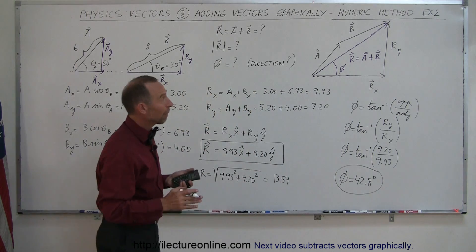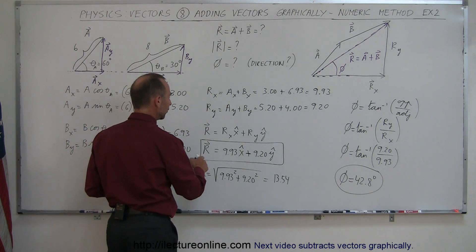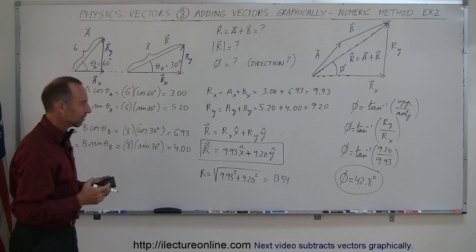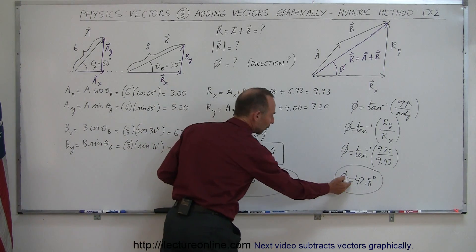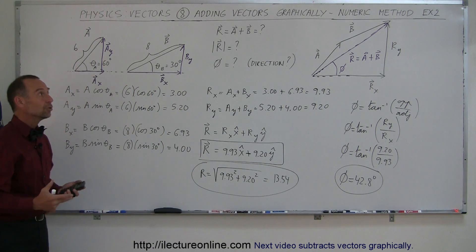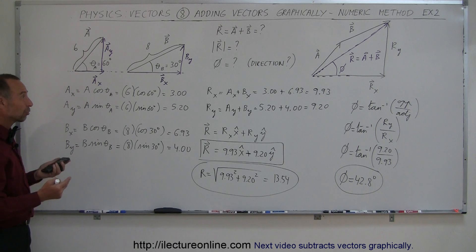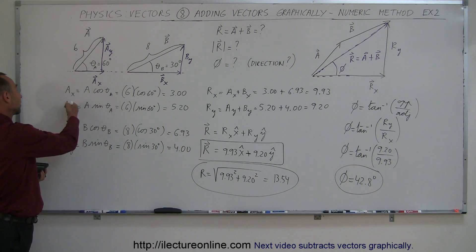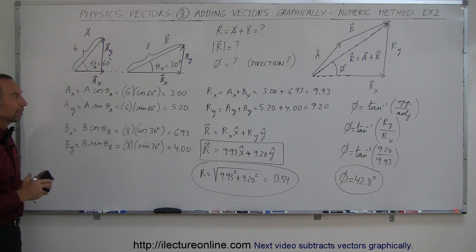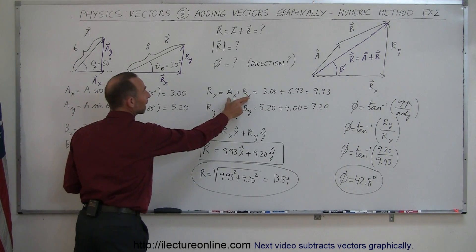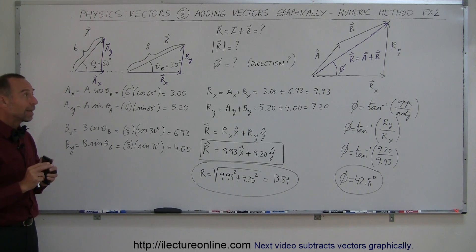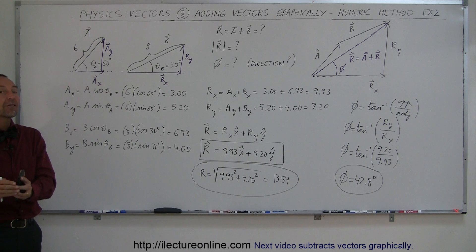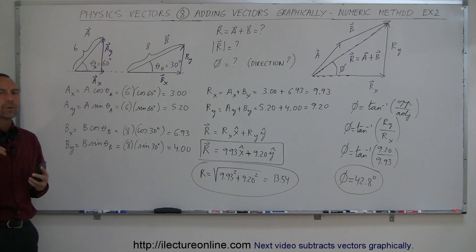So now you have the resultant in vector notation as the sum of x and y components, the magnitude of R which is 13.54, and the direction of R relative to the positive x-axis. That's how you numerically add two vectors — find the x and y components of each vector first, then add x components together and y components together. I'll show one more example where vectors point in negative directions and how to handle that notation.